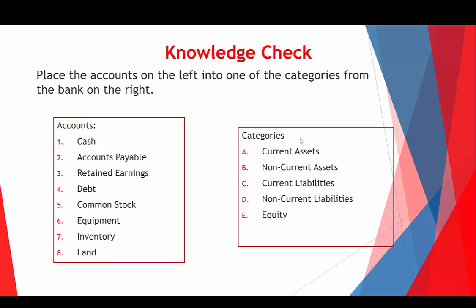How about common stock? That's the second big equity component. So retained earnings and common stock both go into equity. How about equipment? It's a non-current asset because you don't expect to use it up within a year. Inventory? It's a current asset because you want to sell it within a year — Nike doesn't make a shirt and hope to sell it eight years from now.